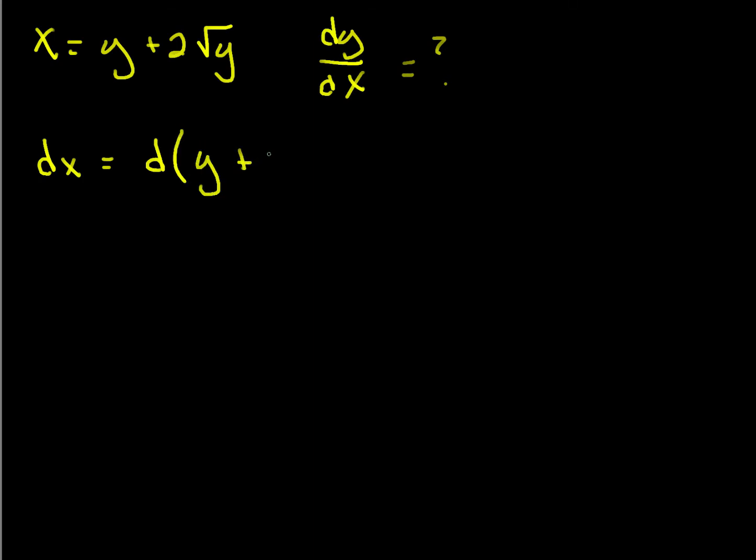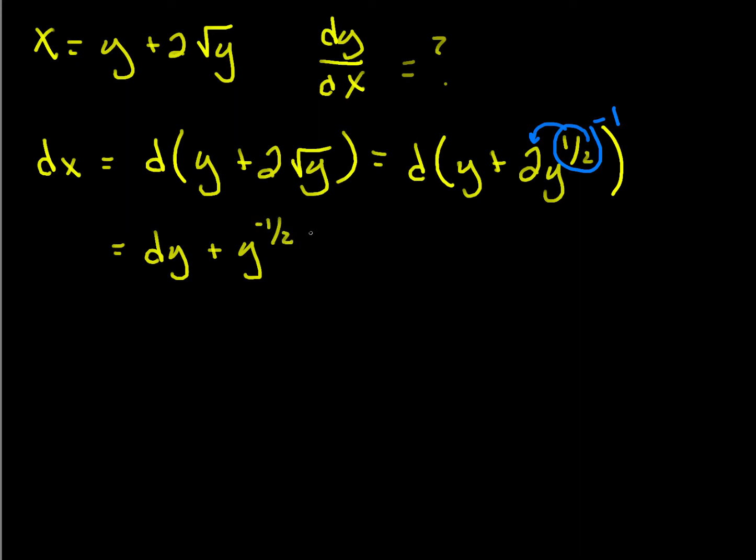So this is the differential of y plus 2 root y. I should have written this as differential of y plus 2y to the one-half, because now I deal with rational powers. And this gets passed through. That's just differential of y. And again here, this follows by our power rule. The exponent will come down, become our new coefficient. So I'll be multiplying it by 2, which is 1. And I subtract 1. So this is equal to dy plus y to the negative one-half dy.